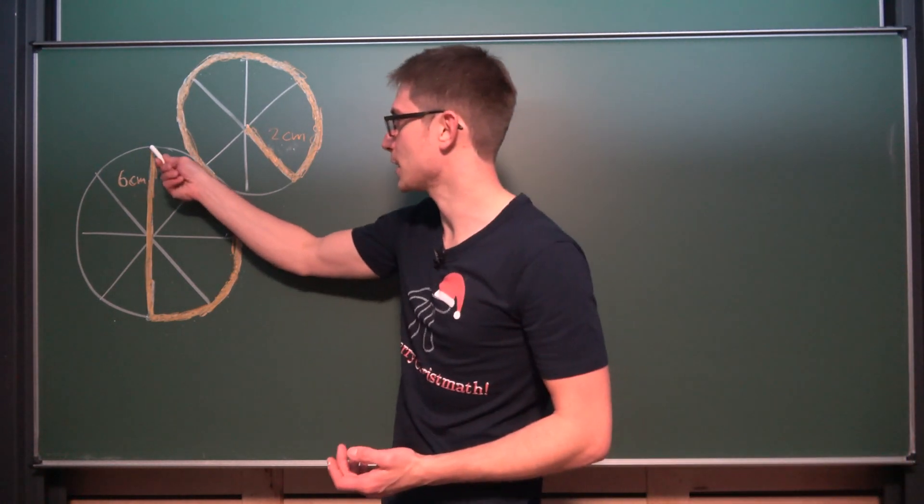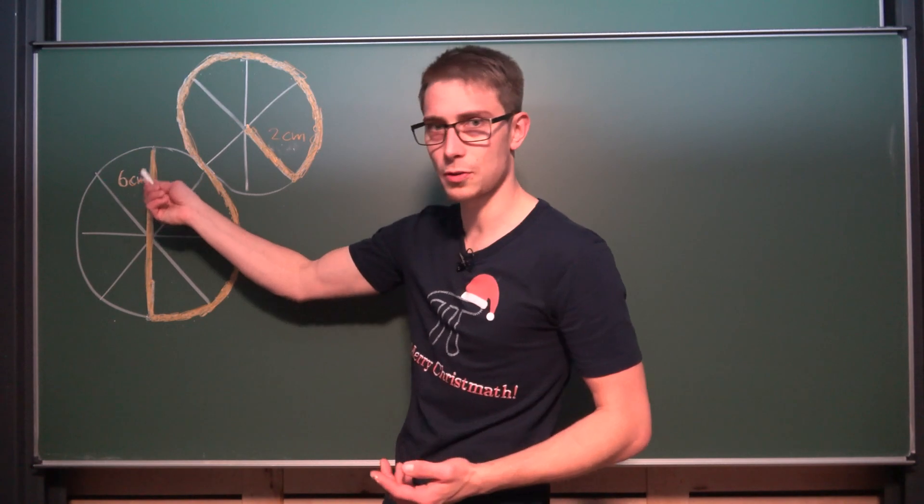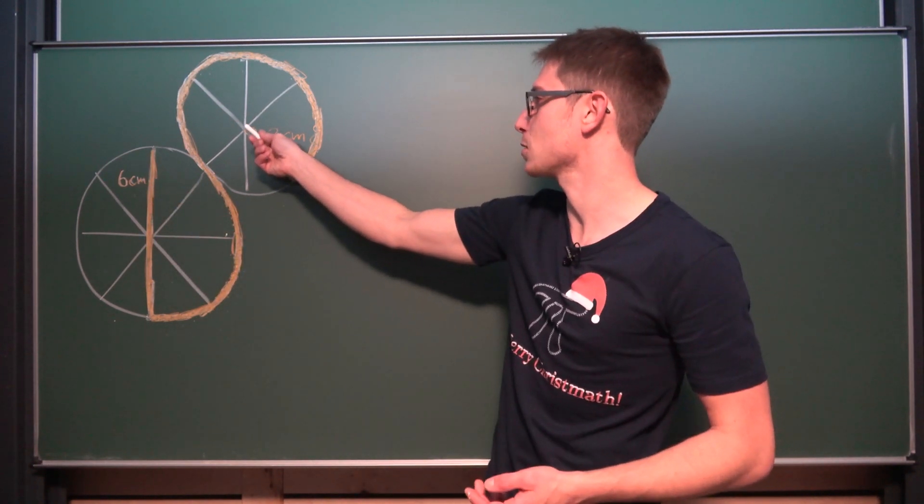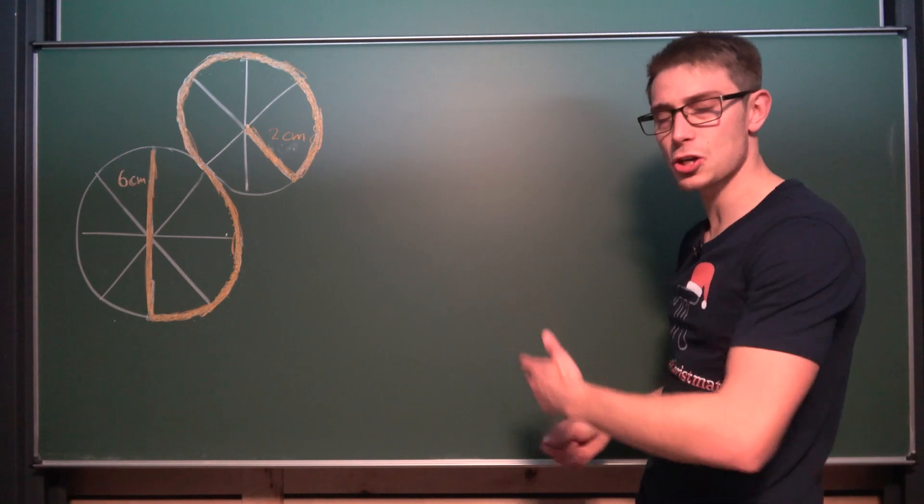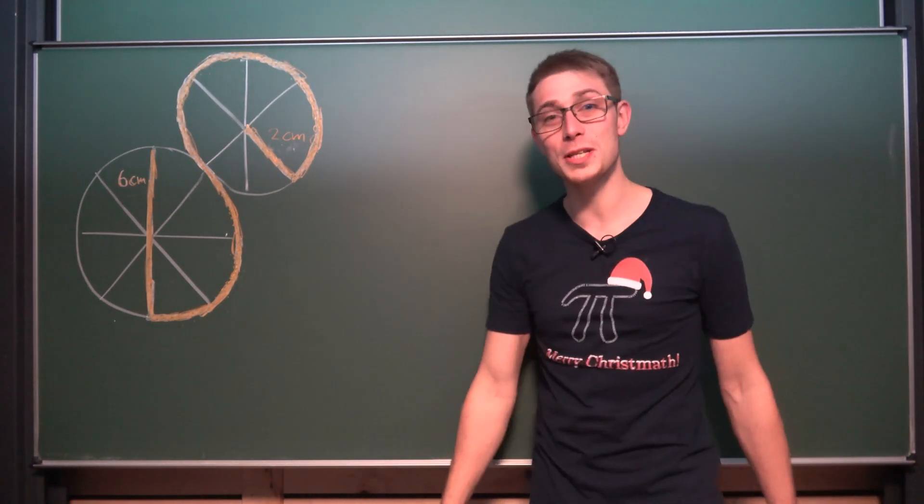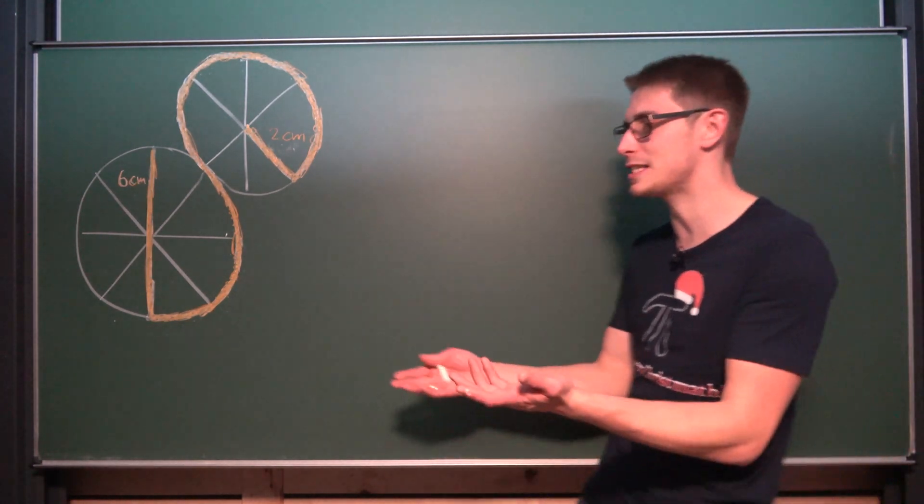And what you might notice is that we know the diameter of this bigger circle 6cm and the radius of the smaller circle 2cm. Give it a shot and let me know in the comments what you got. And now we're going to dive right in.